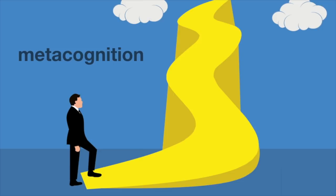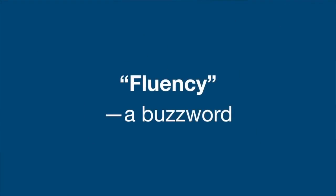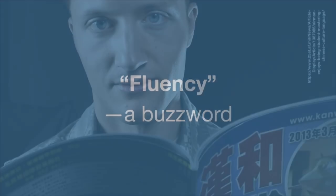Metacognition in the context of language learning means knowing where your goal is and how far you are in reaching that goal. So, what is your Chinese learning goal? A lot of people would answer: I want to be fluent.